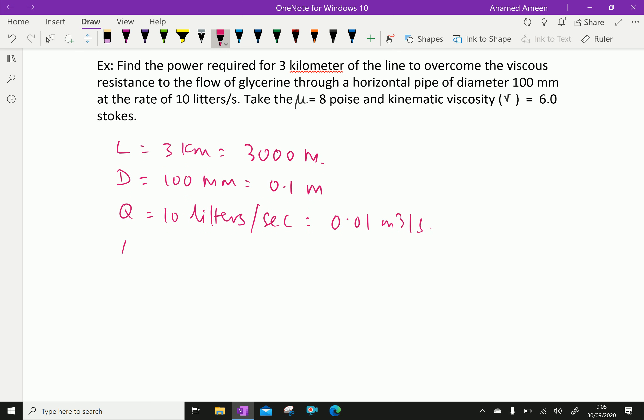Viscosity mu equal 8 poise. 8 poise is equal 8 over 10, which is 0.8 Newton second per meter square.